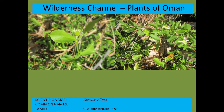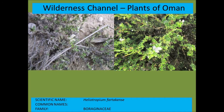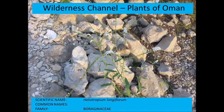Heliotropium pterocarpum — heliotropiums have flowers that form cymes, if I remember correctly — an inflorescence group appearing on the end of the stem. Here's another example of a different species: Heliotropium longiflorum.